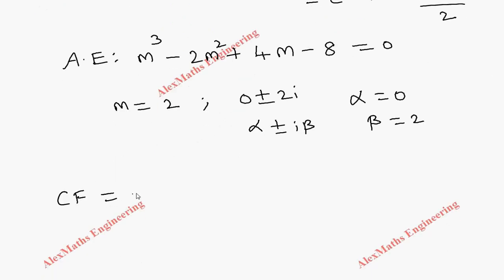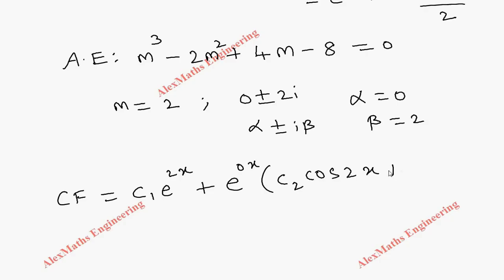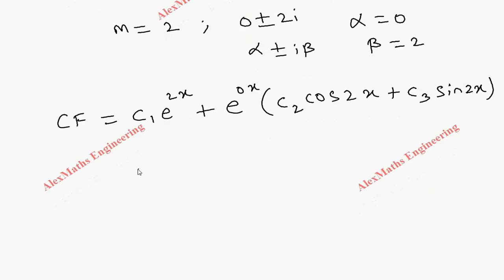As per the second procedure, we write the complementary function. The first m value is 2, so we have c1 e power 2x. Then e power alpha x — since alpha is 0, anything to the power 0 is 1, so we get c2 cos 2x plus c3 sin 2x. The complementary function is: c1 e power 2x plus c2 cos 2x plus c3 sin 2x.